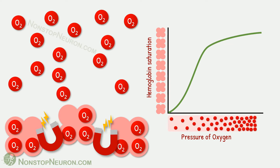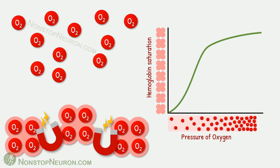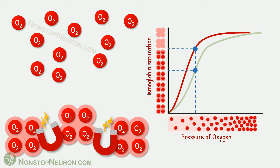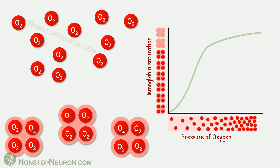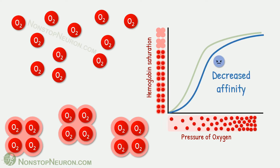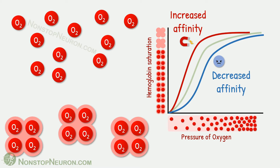Now let's see the opposite type. In the presence of some substances, the affinity of hemoglobin is increased, so more oxygen binds at the same partial pressure. This results in a leftward shift of the curve. Here the same partial pressure causes increased hemoglobin saturation. Thus, leftward shift means the affinity of hemoglobin is increased. To summarize: rightward shift means decreased affinity and leftward shift means increased affinity of hemoglobin for oxygen.